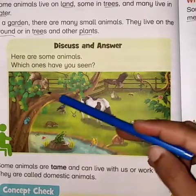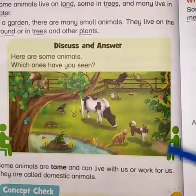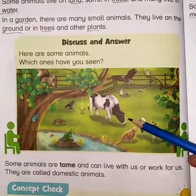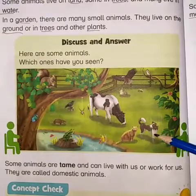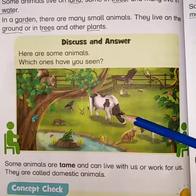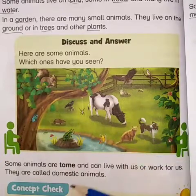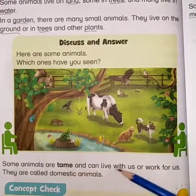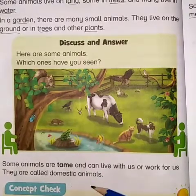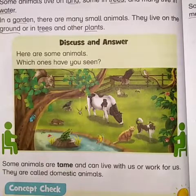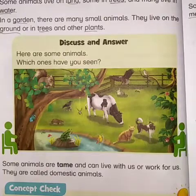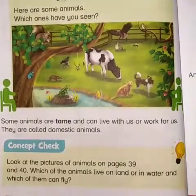These are squirrel and sparrow. Have you seen any of these animals? Did you see a cow, cat, dog, frog? You have seen all these animals. Some animals are tame and live with us or work for us — they are called domestic animals. Domestic animals are those animals who live with us.